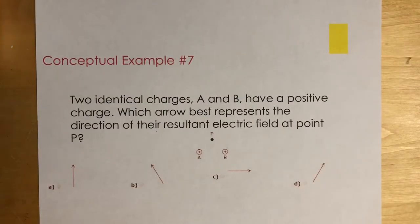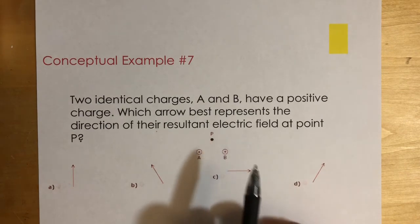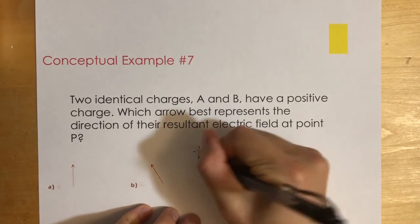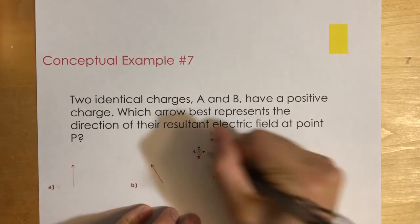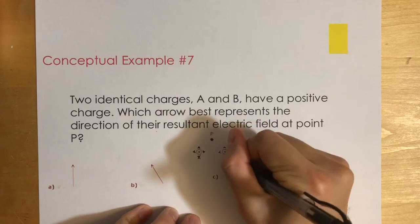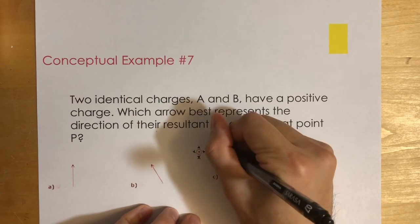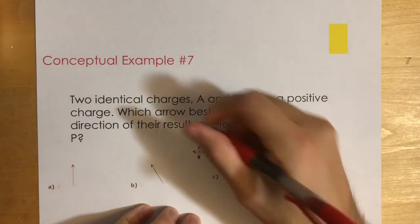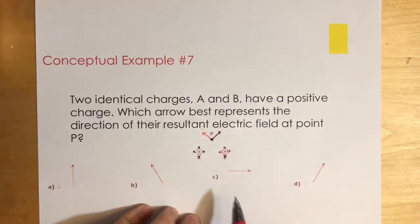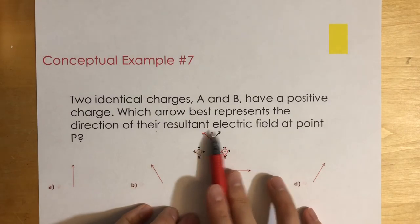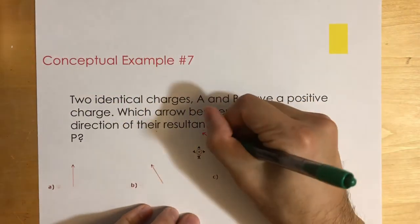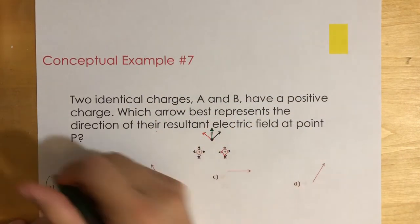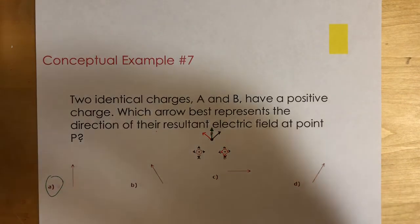Let's look at our last one. Two identical positive charges A and B — which arrow best represents the direction of the resulting electric field at point P? For positive charges, the electric field points outward. The field from each charge points diagonally outward toward P: one pointing this way in red, the other pointing that way. The left and right components cancel each other out, so the net electric field points straight up. The answer is A. Thanks for watching!